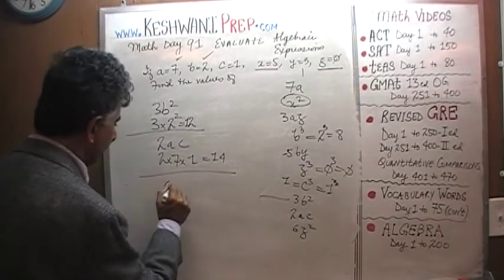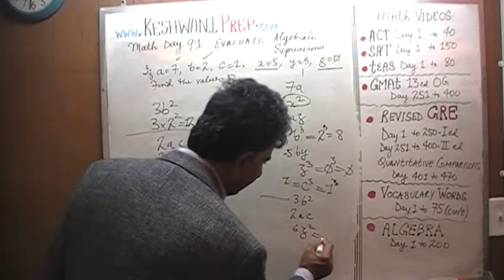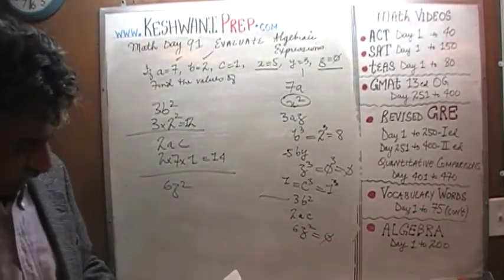Finally, finally we have 6Z squared. Again, Z is equal to 0, so 6Z squared is going to be 0 as well.